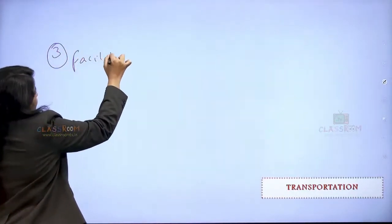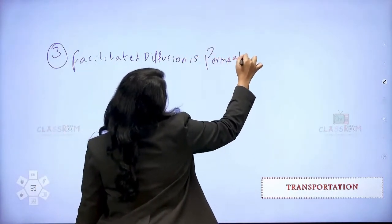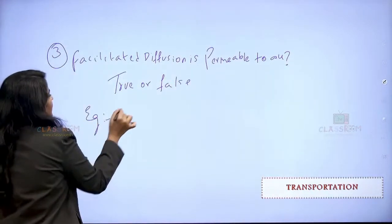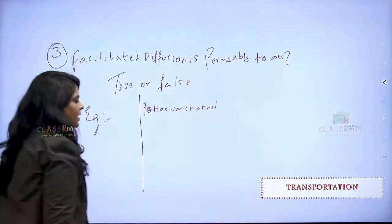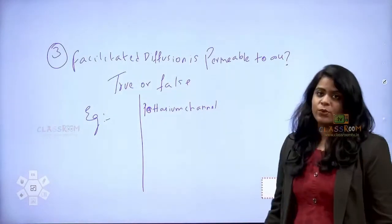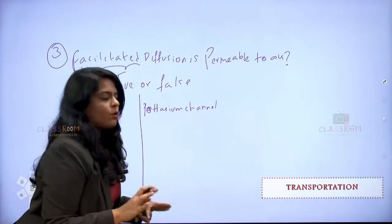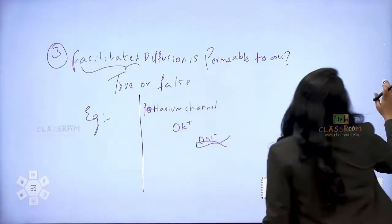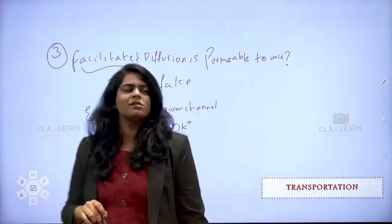Facilitated diffusion is permeable to all — is this true or false? Consider a potassium channel: will facilitated diffusion allow all molecules to transfer from one place to another? No. By the name itself, facilitated means it allows only a few things. For example, a potassium ion channel will allow only potassium ions in and will push sodium out. That is the function of facilitated diffusion — it does not allow everything through.